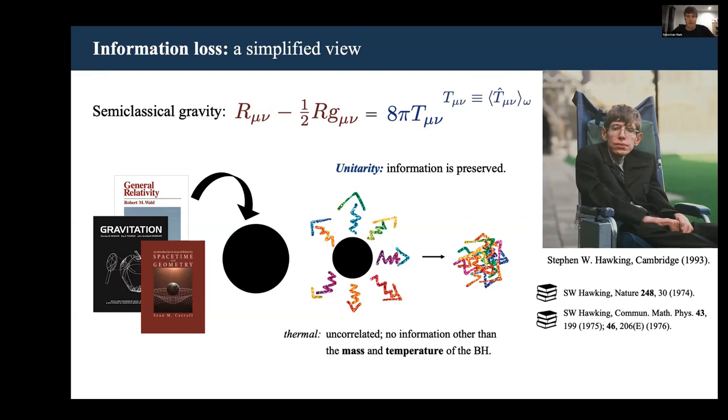In fact, in a semiclassical analysis, you can ascribe this loss of information to the fact that these quantum correlations can propagate into the singularity within the black hole.